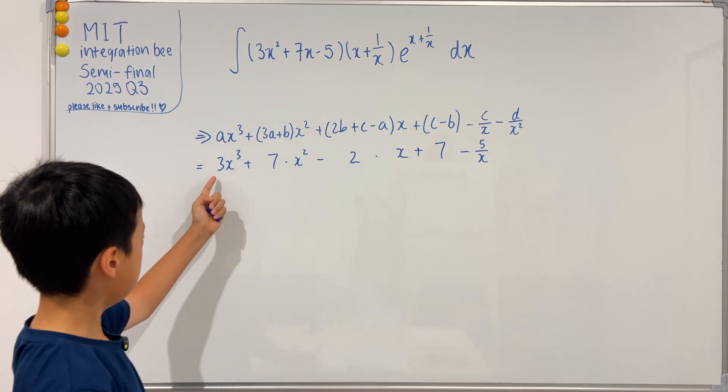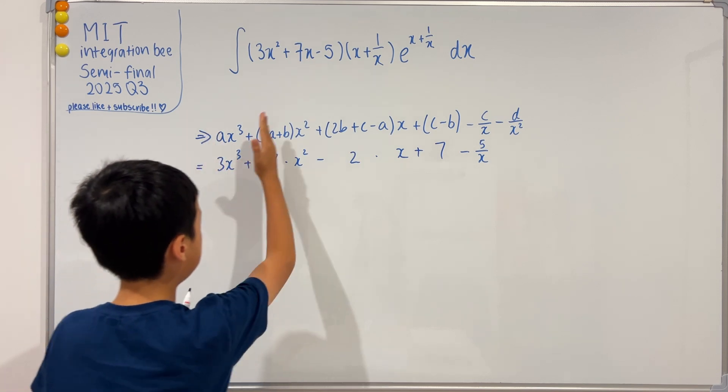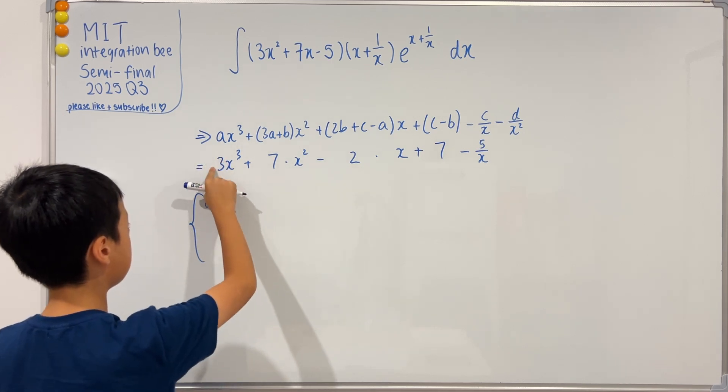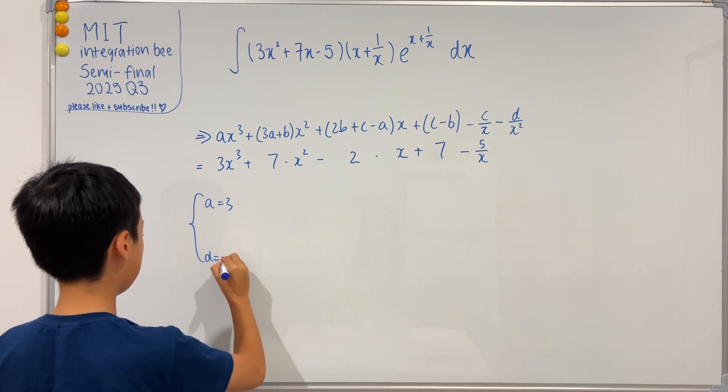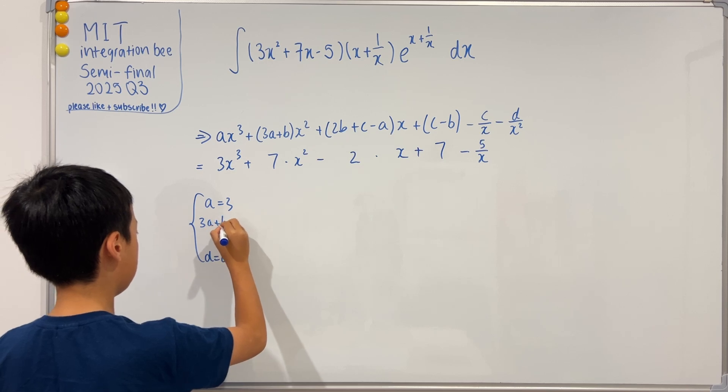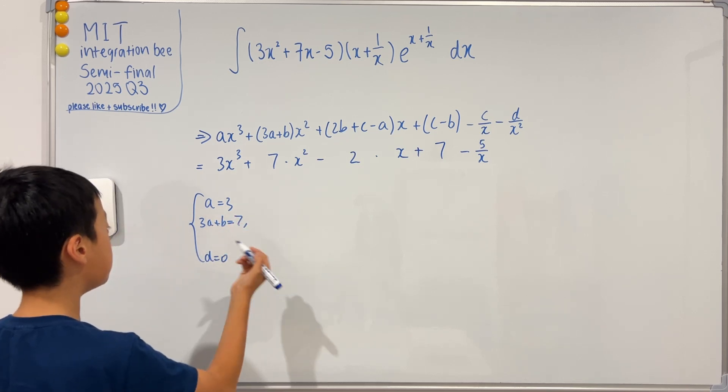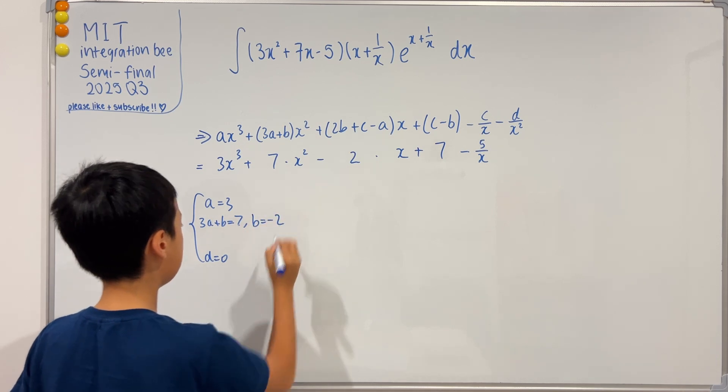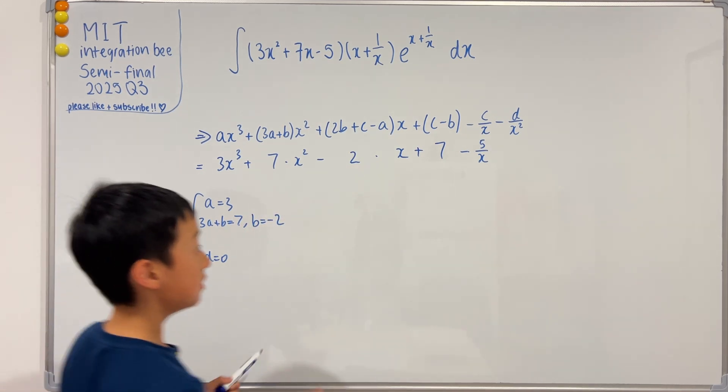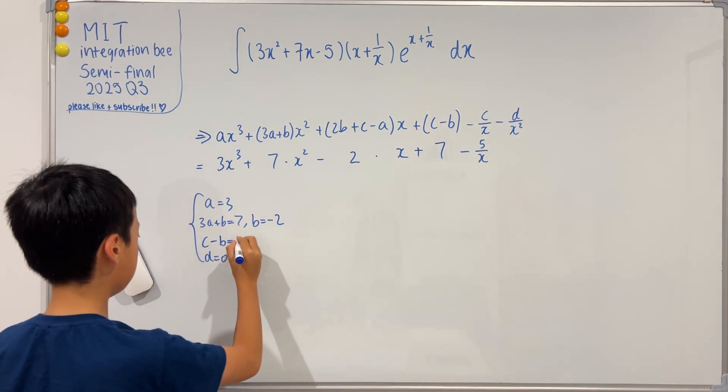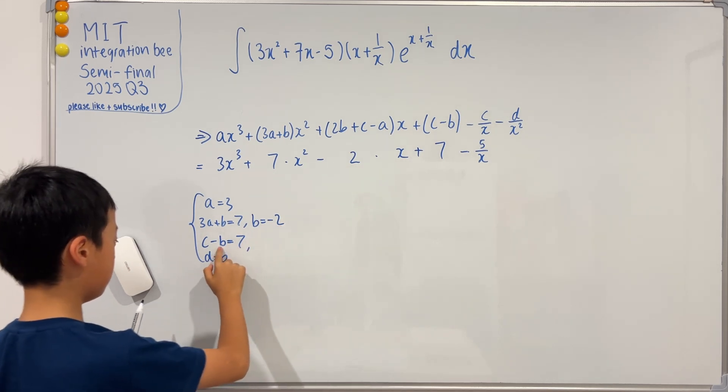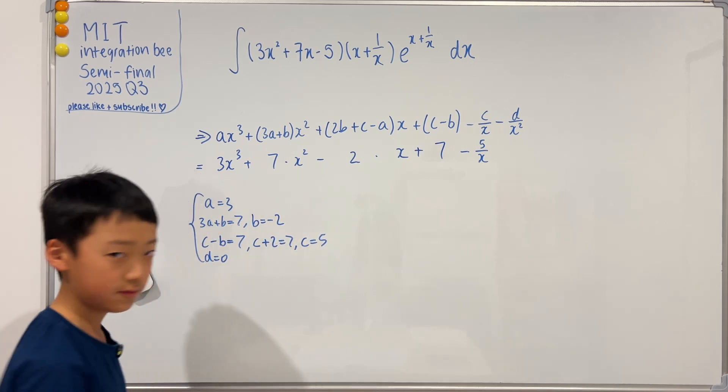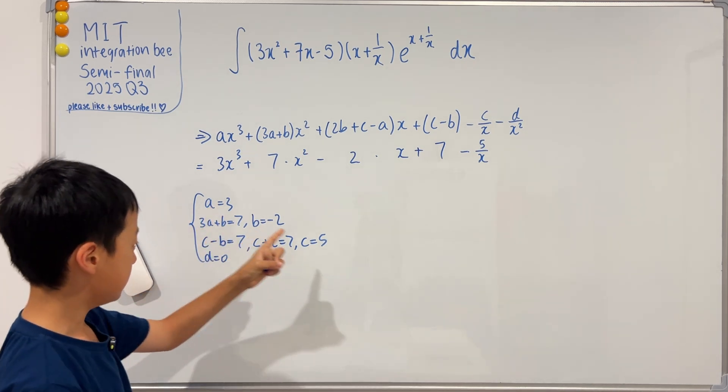As you can see, I already kind of did the work for you. I just aligned up the terms. Now we can see that a is three, and there's no d term so d is zero. 3a plus b equals seven, so if we plug in a equals three, then 9 plus b equals seven, so b equals negative two. We can also see that c minus b equals seven, and since b is negative two, this becomes c plus two equals seven, so c equals five. Now we have a, b, c, and d.